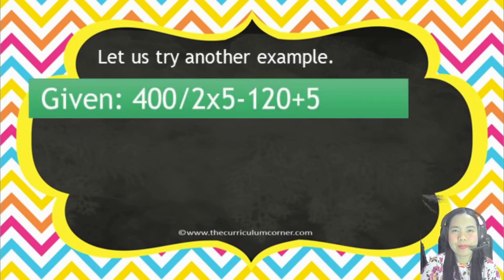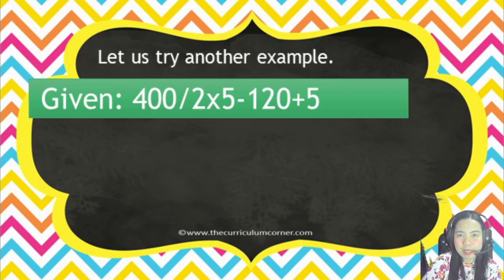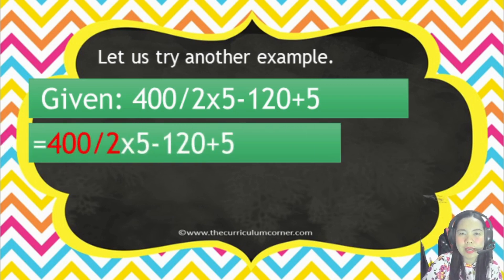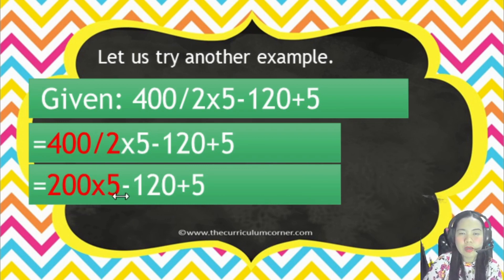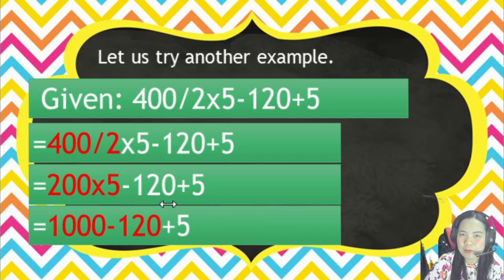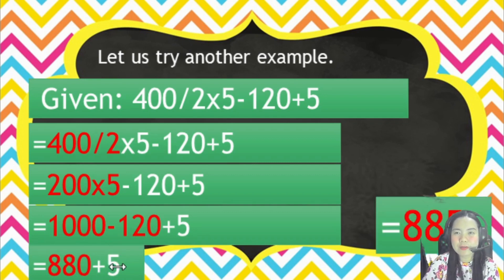Let's try another example. The expression has division, multiplication, subtraction, and addition. We do division first: 400 divided by 2 equals 200. Since division and multiplication go left to right, next we multiply 200 times 5, the answer is 1000. Then 1000 minus 120 equals 880, and then plus 5. The final answer is 885.